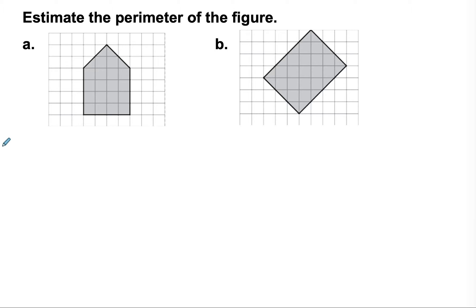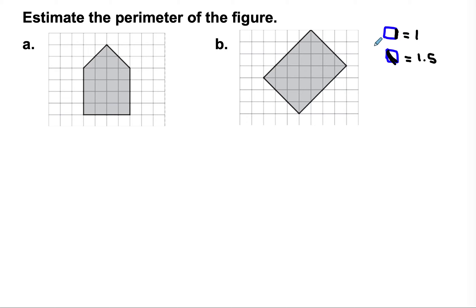Our first type of example is estimating perimeter of composite figures on graph paper. As a reminder: if you have the side length of a square, that equals one unit. However, if you have a diagonal line cut through a square, that's worth one and a half units, because the diagonal of a square is a little bit longer than the actual side. We'll count the number of straight sides, the number of slants, and then add them together.